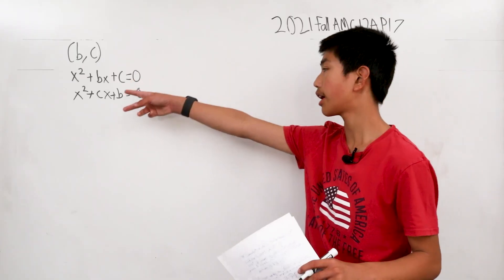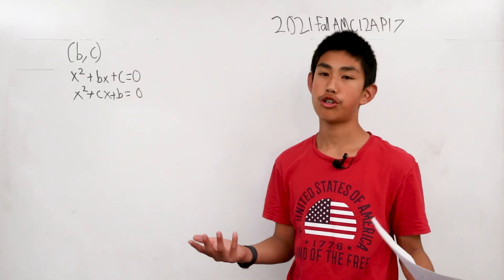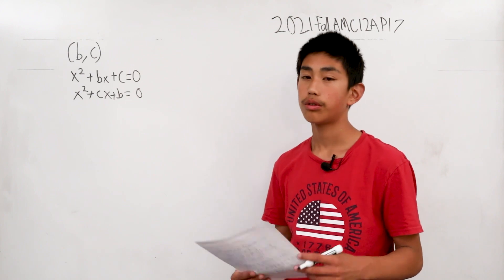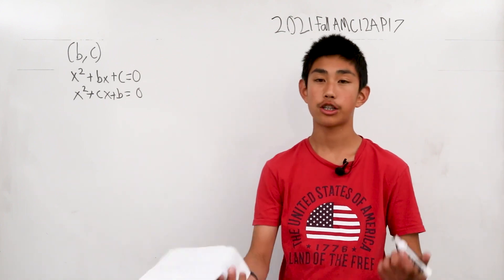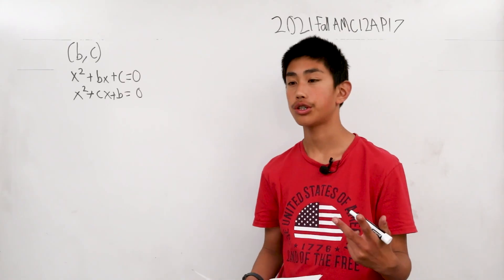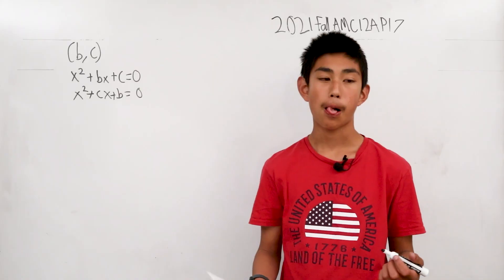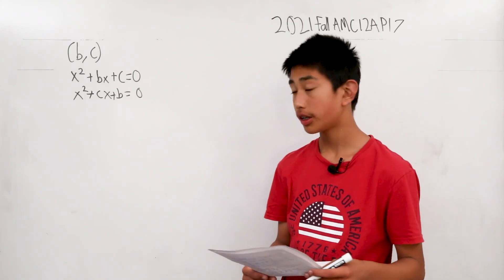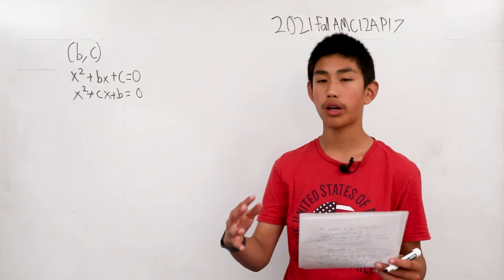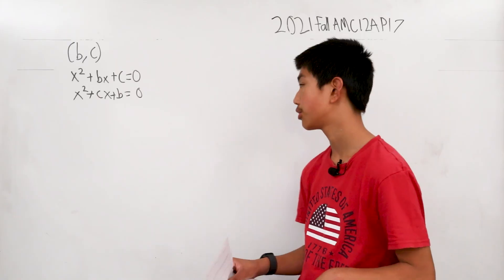These are quadratics, and you can interpret them using the quadratic formula. The square root in the numerator is called the discriminant. If it's greater than zero, it has two solutions. If it equals zero, it has one, and if it's less than zero, it has none. We don't want two solutions, so either one or zero solutions.